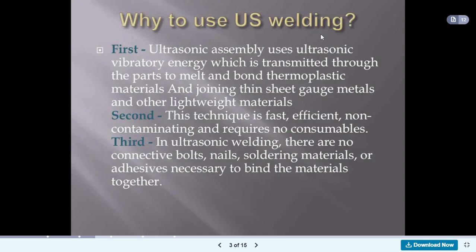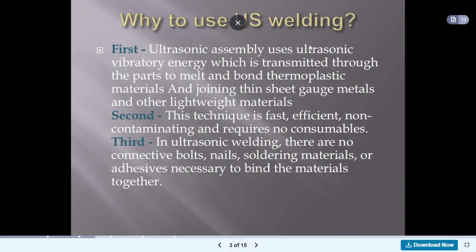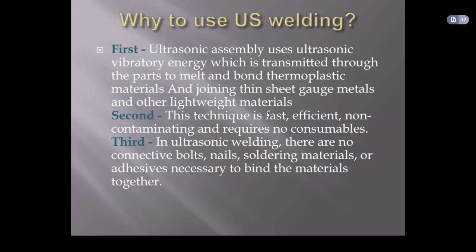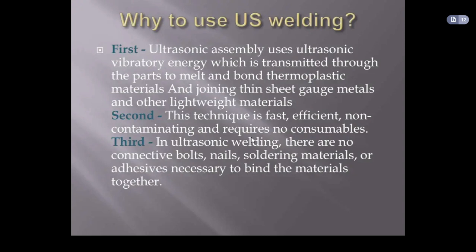Why use ultrasonic welding? Ultrasonic assembly uses ultrasonic vibratory energy which is transmitted through the parts to bond thermoplastic material and join thin gauge metal and light weld materials. Due to the high frequency vibrations, local friction is produced, heat is generated, and the material gets joined together.